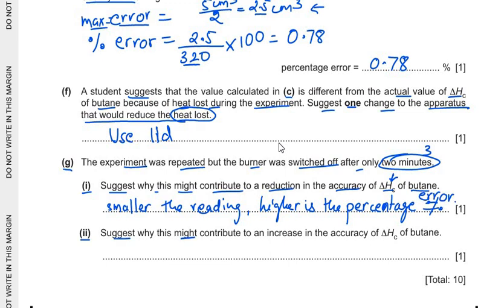Second part, suggest why this might contribute to an increase in the accuracy of delta Hc of butane. Now how can it increase the accuracy? They have asked both ways, decrease and increase of the accuracy. It can be increased because if the water is heated for smaller amount of time, then the heat loss will be less. Heat loss is reduced and that's why the accuracy may increase.